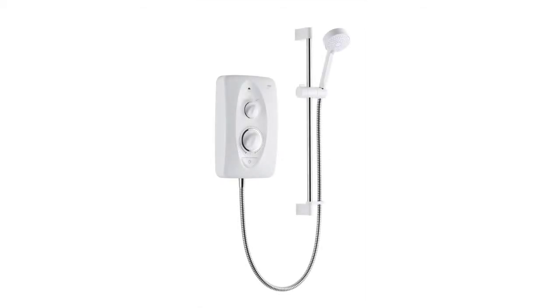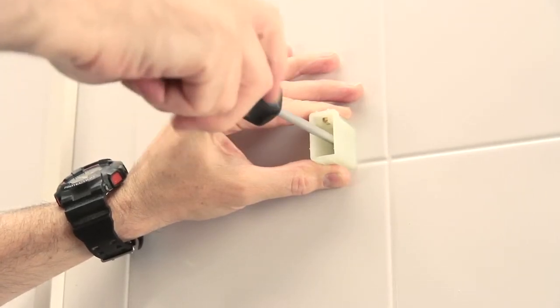Remove the old shower kit from the wall if you haven't done so already. You can use the existing fixing holes for the new kit. Screw the top and bottom fixing brackets to the wall.